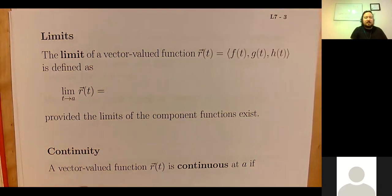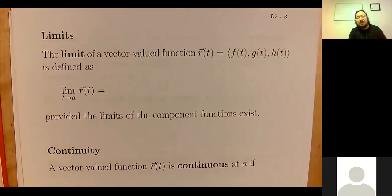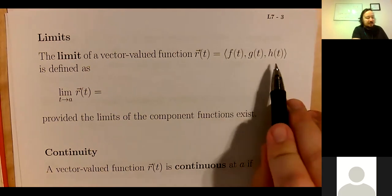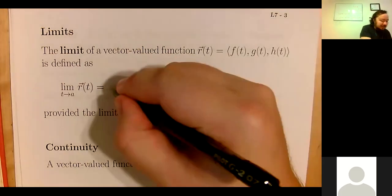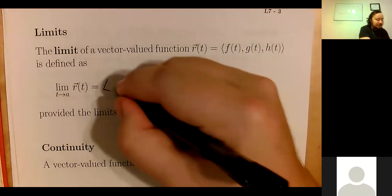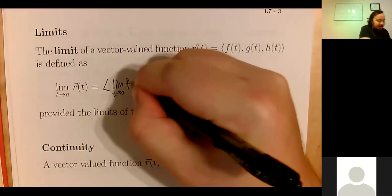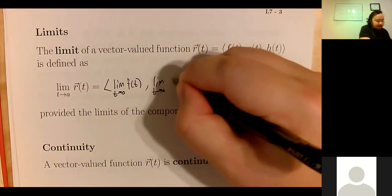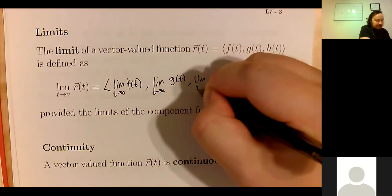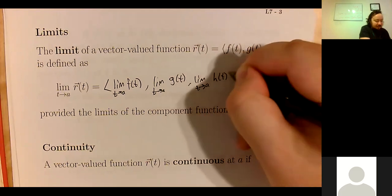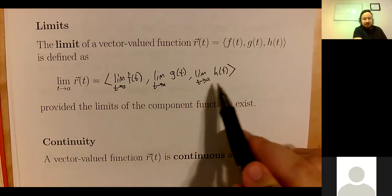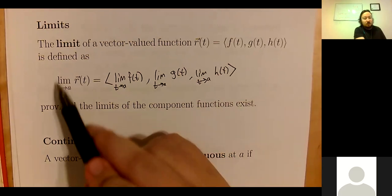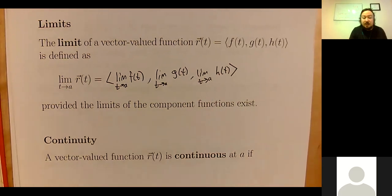The limit of a vector-valued function is defined component-wise: the limit as t → a of r(t) equals the vector of limits of each component — [lim f(t), lim g(t), lim h(t)]. To take the limit of a vector-valued function, just take the limit of each component. The limit exists only if all three component limits exist; if even one doesn't exist, the whole limit doesn't exist.